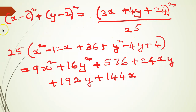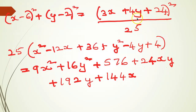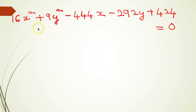Cross multiplying and expanding using (a - b)² and (a + b + c)²: 25[(x - 6)² + (y - 2)²] = (3x + 4y + 24)². Expanding the left side gives x² - 12x + 36 + y² - 4y + 4, and expanding the right side with the full trinomial square formula, then simplifying, the final equation of the parabola is 16x² + 9y² - 444x - 292y + 424 = 0.